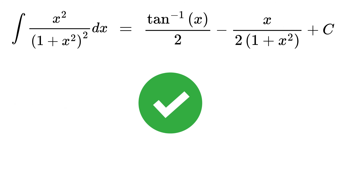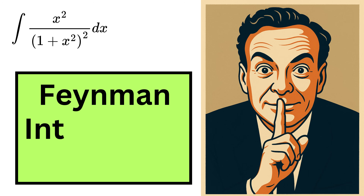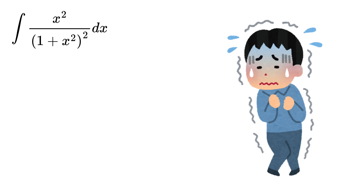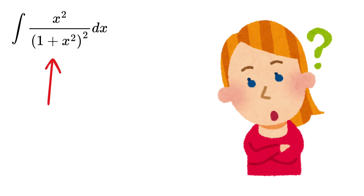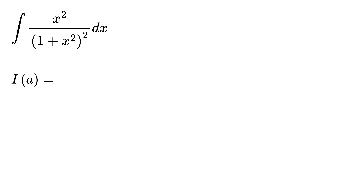But there's another way to approach this problem — one that might suit your style or it might not, but it's worth knowing — which is Feynman's integral trick, also known as differentiation under the integral sign. This technique can simplify integrals that look messy or intimidating by introducing a parameter into the integrand and then cleverly differentiating with respect to that parameter. So assume a function I of a equals the integral of 1 over 1 plus a times x squared.